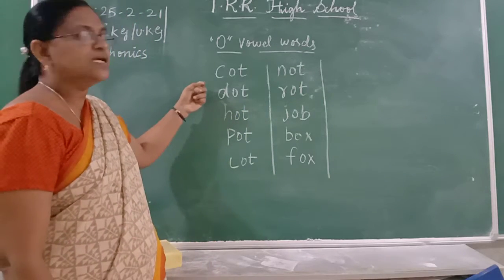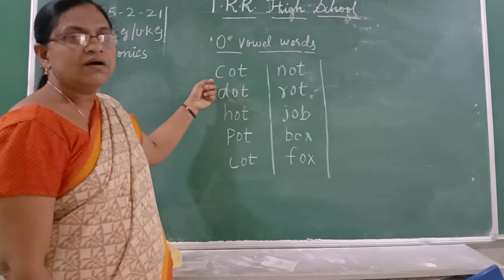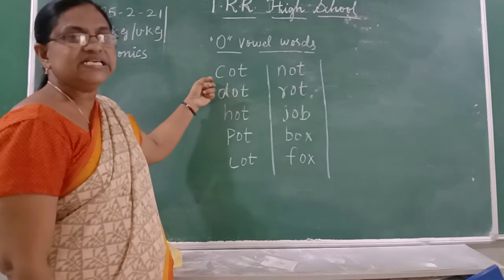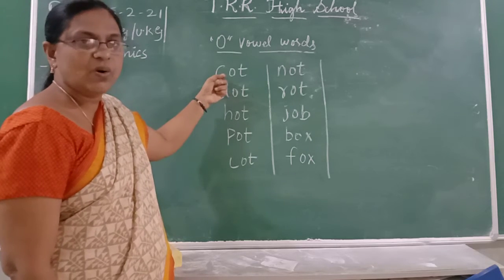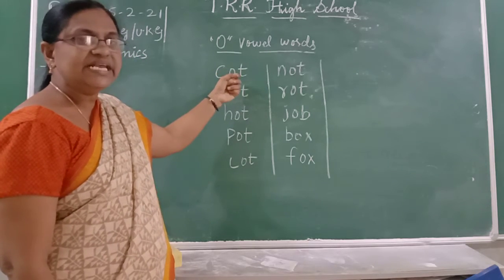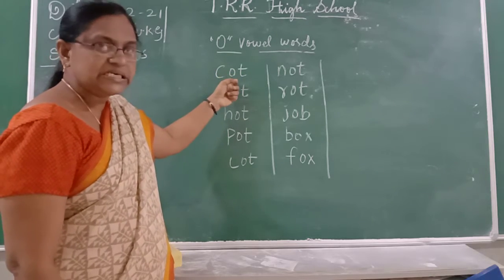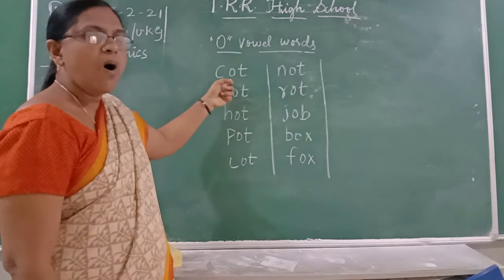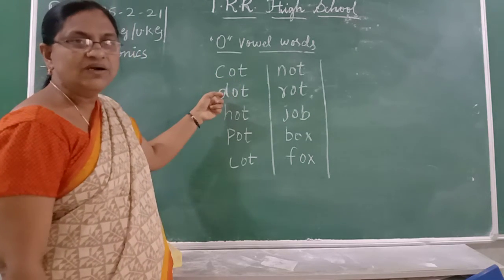The first word is 'caught.' So how do you sound it? What is the sound of a C? The sound of a C is K. And the sound of O is O. And the sound of T is T. Caught. Caught. Caught.